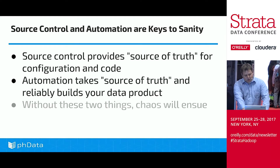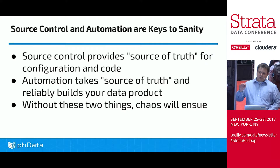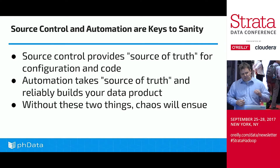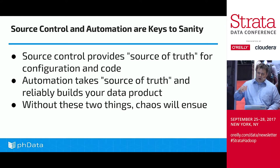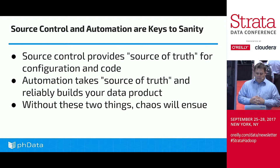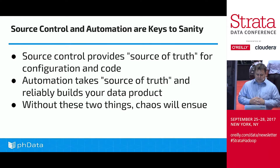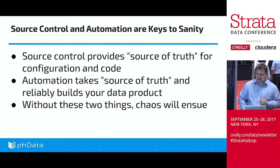Source control and automation are things that can reduce chaos and make this endeavor more manageable. All configuration and code needs to be 100% in source control. There needs to be no manual configuration whatsoever — if you're doing manual configuration and you need to build out 100 new servers, it's not going to work. Artisanal server builds are just not possible. The source of truth absolutely has to be in source control.